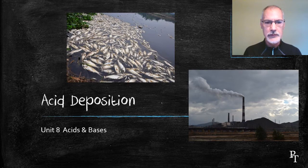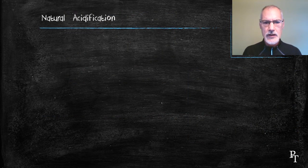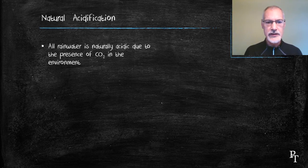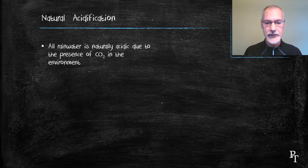This program is about acid deposition. First of all, rain is naturally acidified. As it passes through banks of carbon dioxide, it can mix with that carbon dioxide to produce carbonic acid.